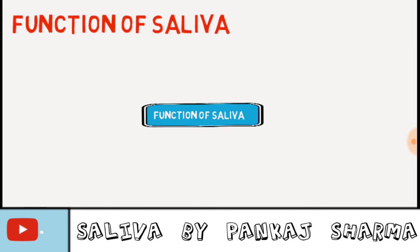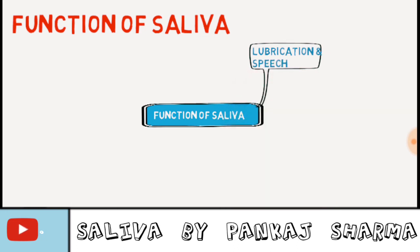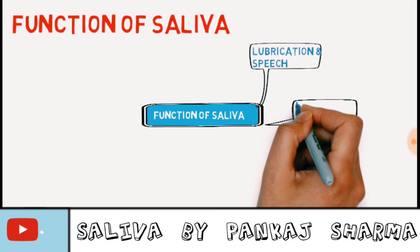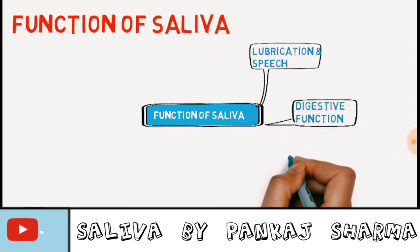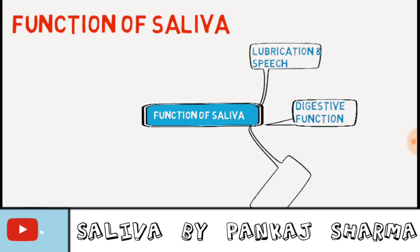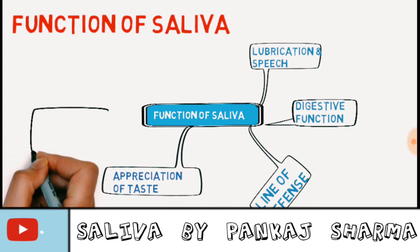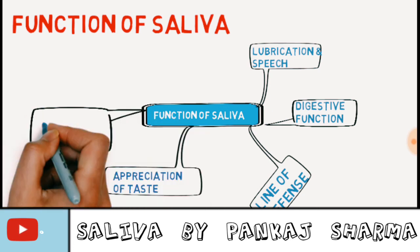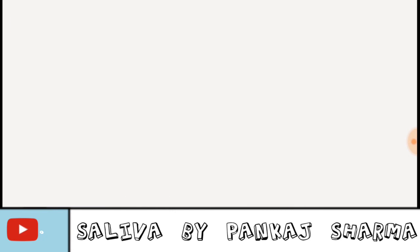Now we will be discussing the functions of saliva. Number one is lubrication and speech. Second is digestive function. Third is line of defense. Fourth is appreciation of taste. And the last one is excretory function.